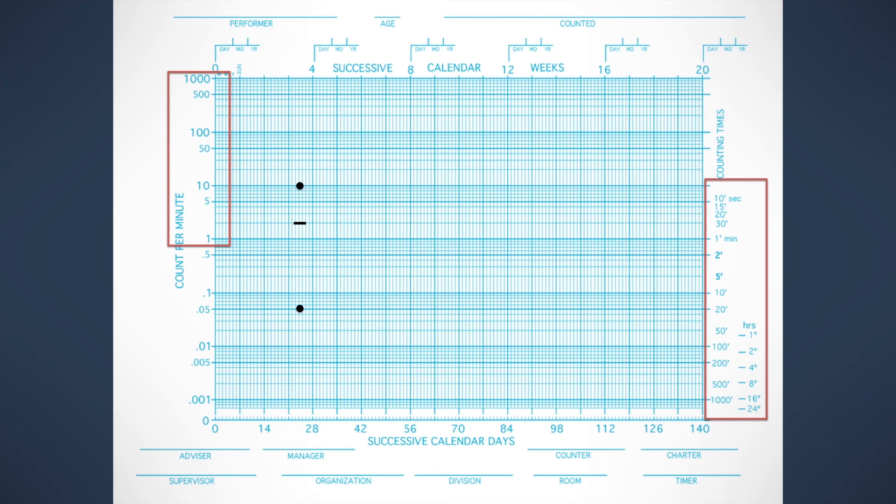But let's say you have data falling all the way down here. I want to teach you how to read this in two different ways. You could look over here and interpret those data as that's a behavior occurring at 0.05 per minute, or you can look over to the right side of the chart and you could express it in this way. You could say that's a behavior occurring about once per 20 minutes.